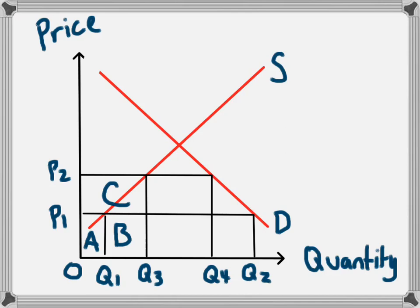The overseas producers are selling Q3 to Q4 and charging P2. So the revenue they receive is going to be these two boxes together, D plus E. That's the revenue they receive.